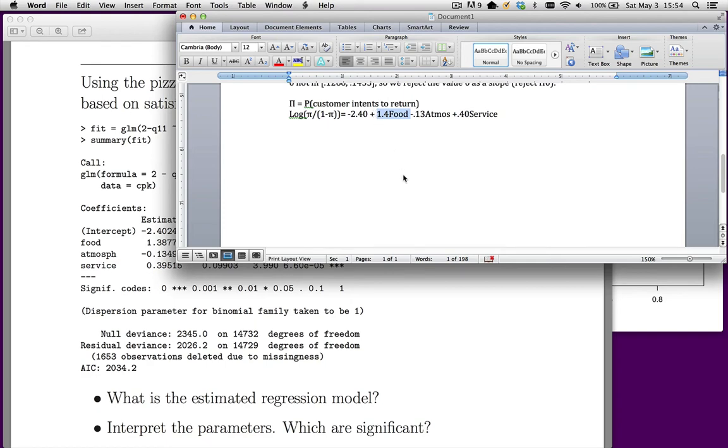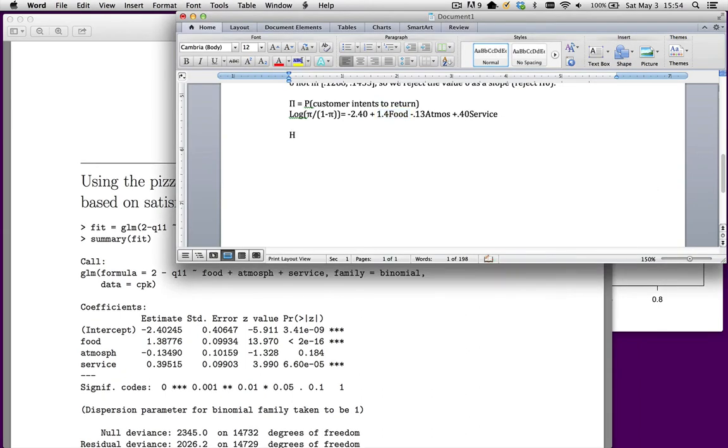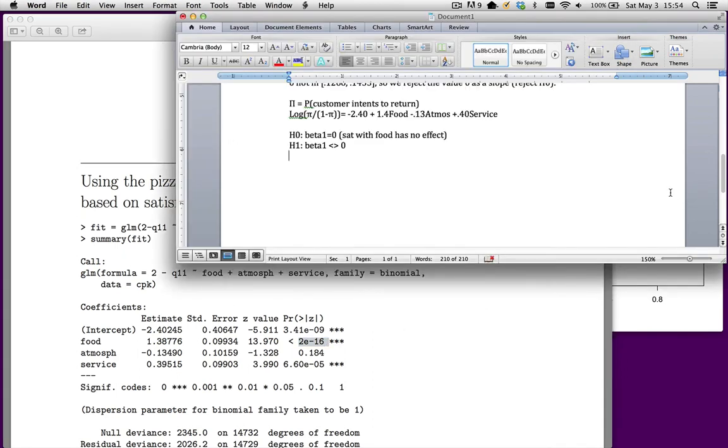We test whether that's different from zero. H₀: β₁ = 0, meaning satisfaction with food has no effect. The alternative is β₁ ≠ 0. The p-value is absolutely tiny—about 10⁻¹⁶, which is way less than 0.05. So reject H₀ and conclude that food matters.